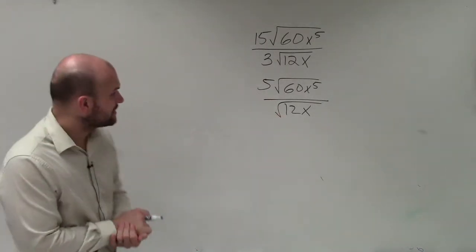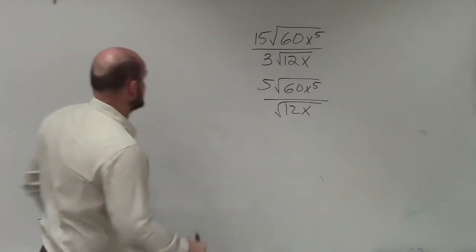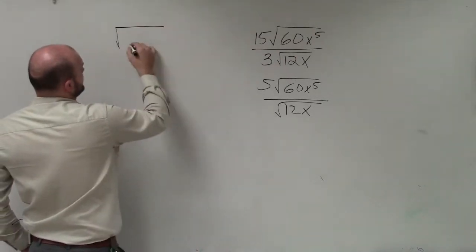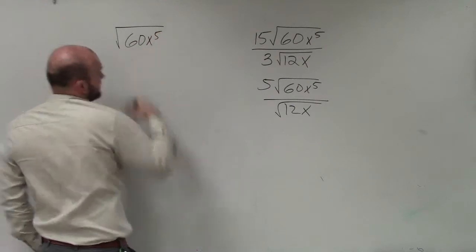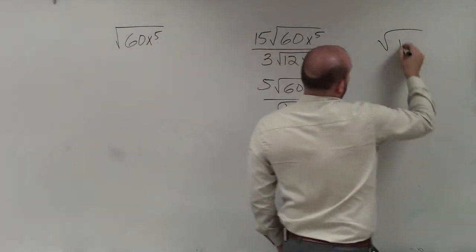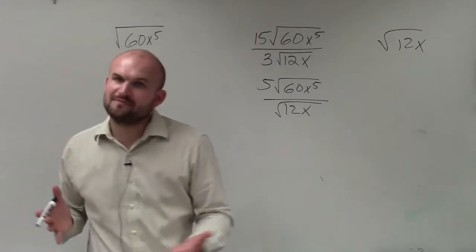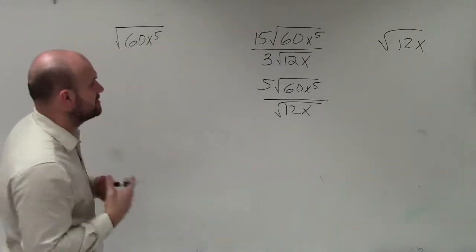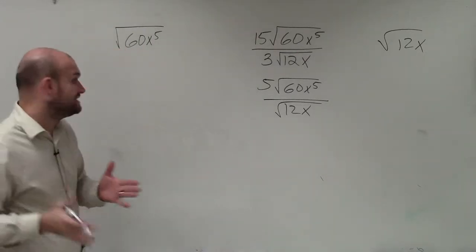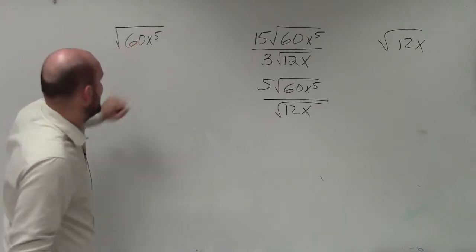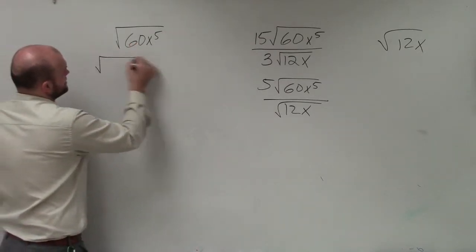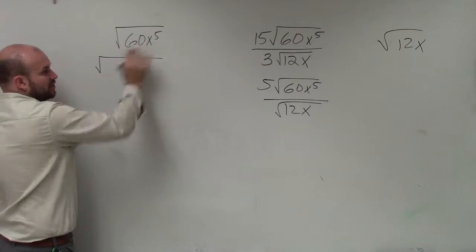The next thing I'd want to do is simplify each of my radical expressions separately. So here, I have the square root of 60x to the fifth, and here, I have the square root of 12x. Now, to simplify this, you can use prime factorization, but I prefer to determine the larger square numbers that divide into each of these, or always rewrite them as square numbers or square terms here.